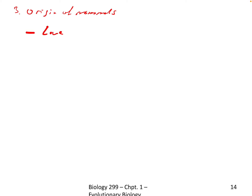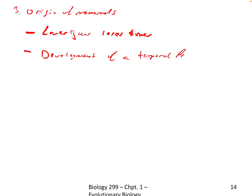We see some major trends in the origin of mammals. First, the lower jaw becomes more simple - it loses bones until we get to a point where we only have one, the dentary. We also see the development of a temporal fenestra - a fenestra is an opening or a depression - specifically a fenestra behind the eye socket. That's a uniquely mammalian feature.